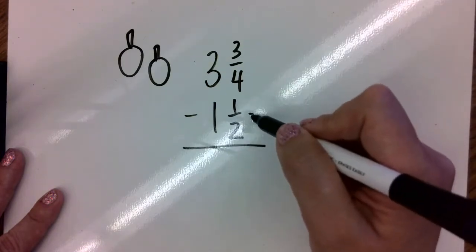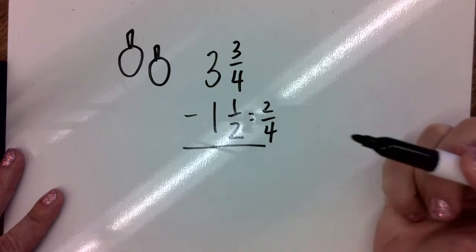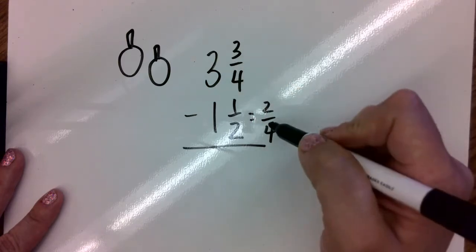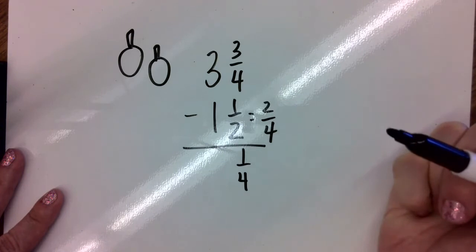I know that one-half is equal to two-fourths. So now I can subtract three-fourths minus two-fourths which is one-fourth.